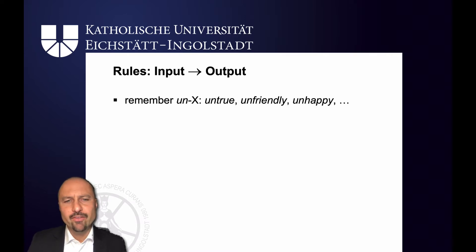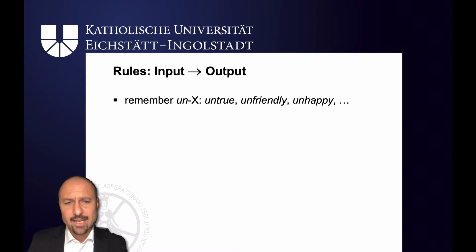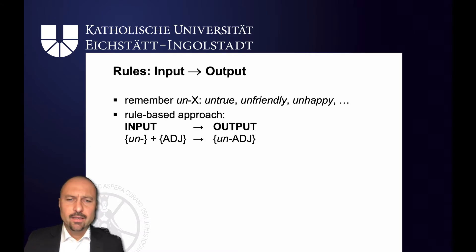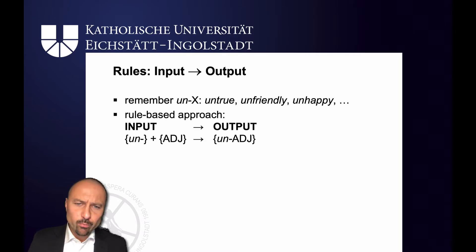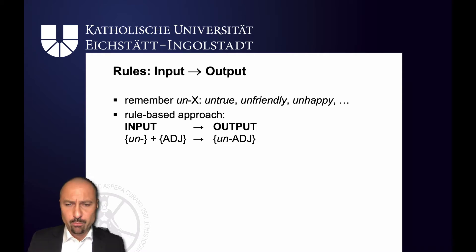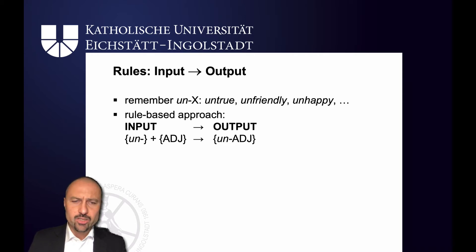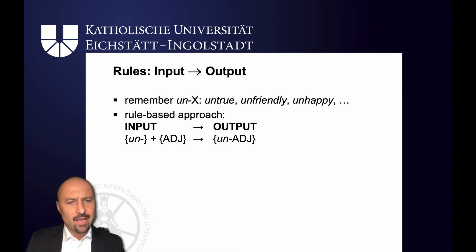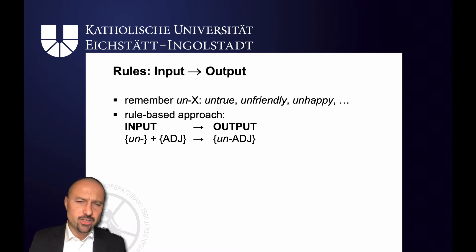Remember my favorite example, the un-ex construction: untrue, unfriendly, unhappy. If you adopt a rule-based approach, you treat these as input-output relationships. So you've got an un-morpheme which needs to attach to an adjective in the input, and that's going to give you un-adjectives in the output.